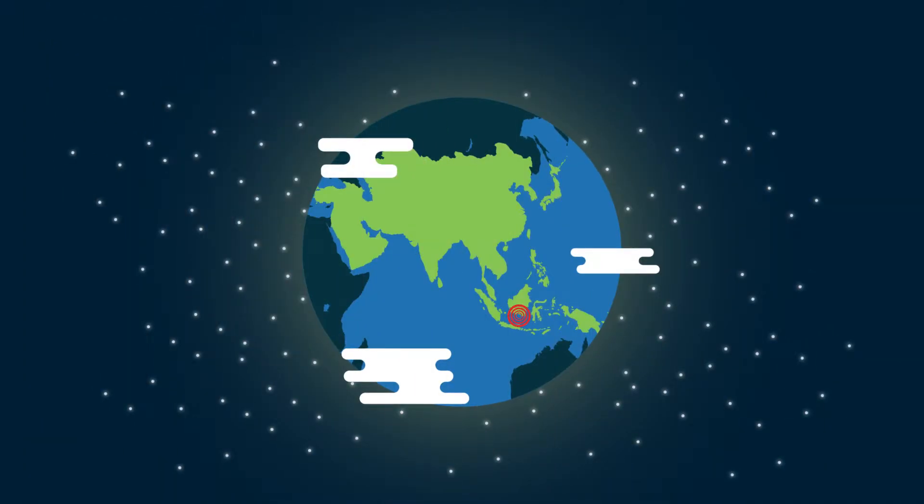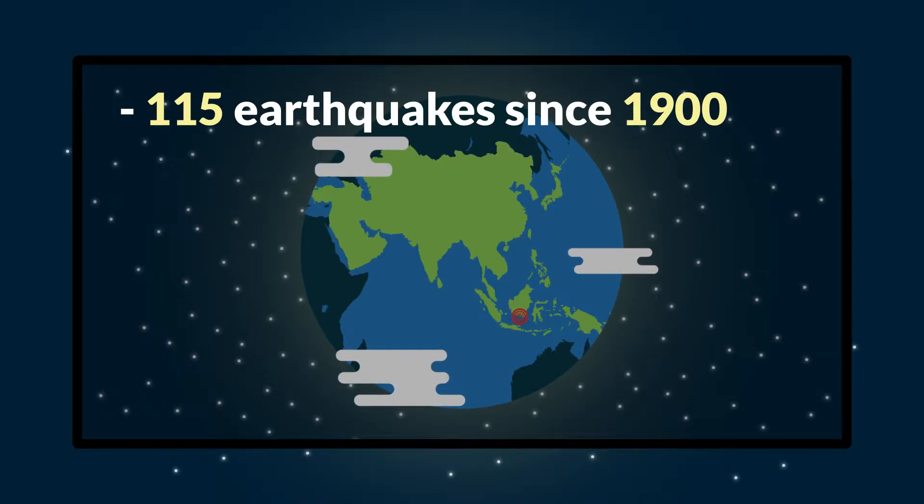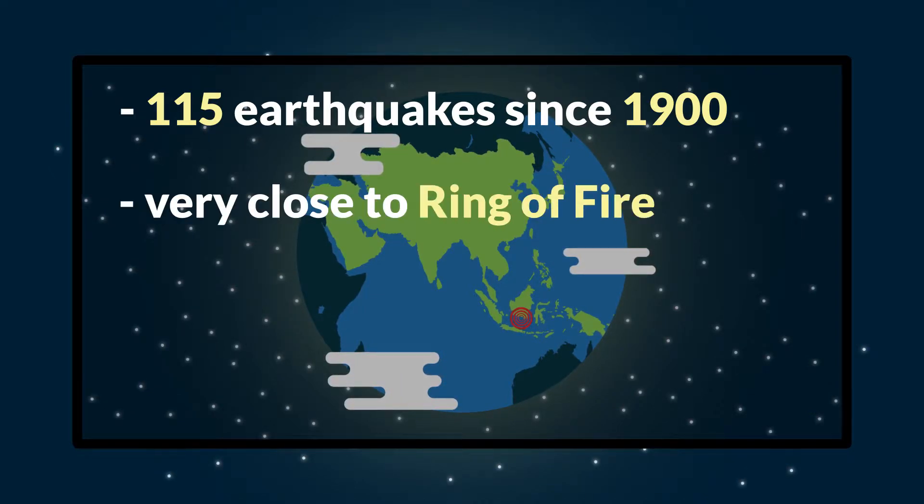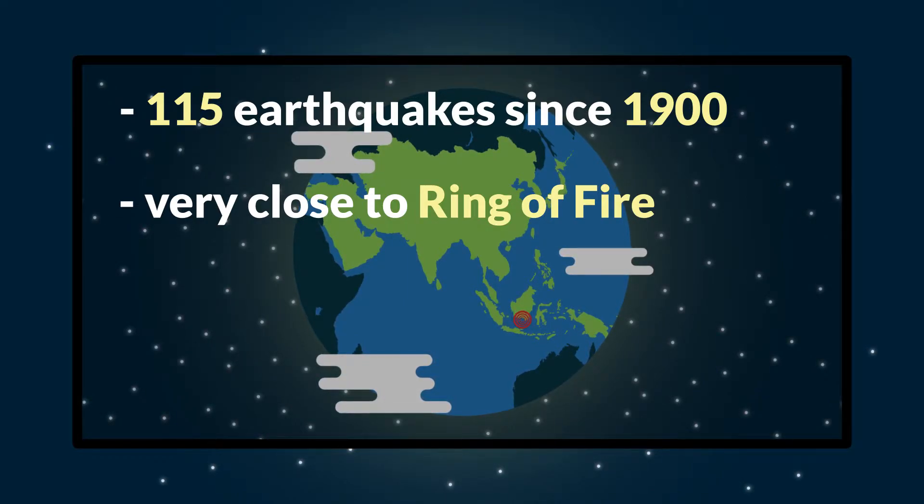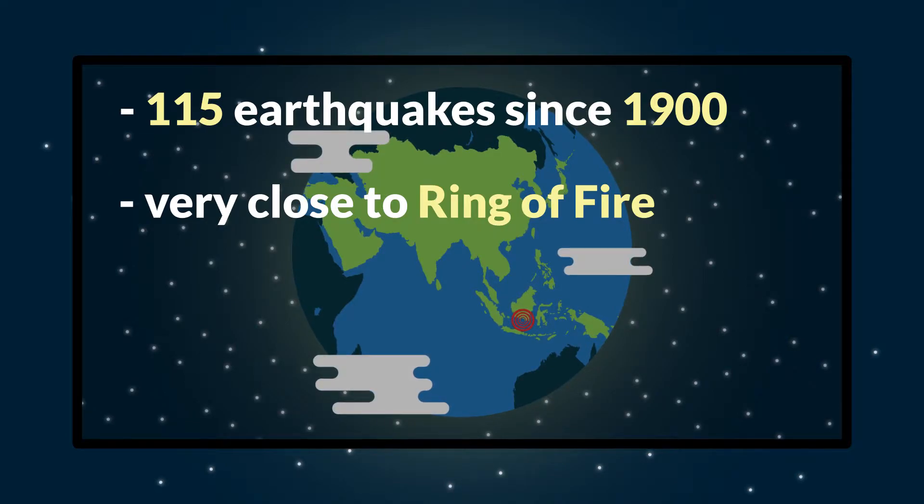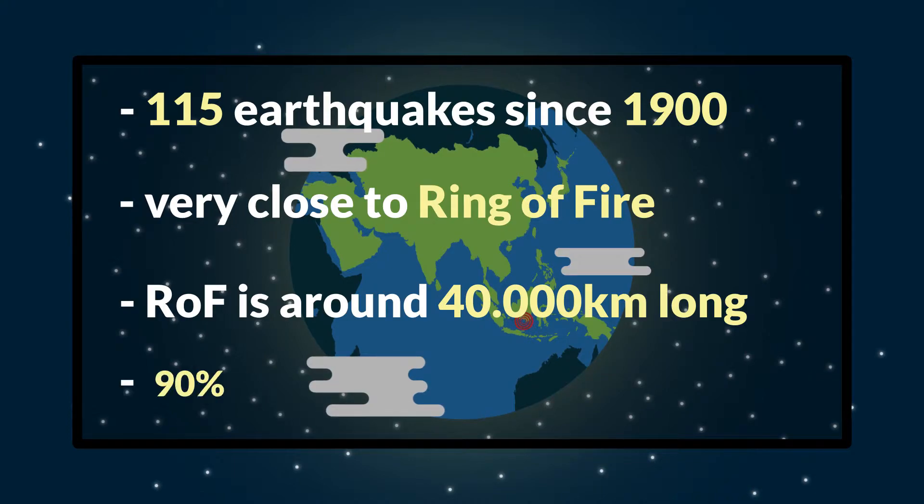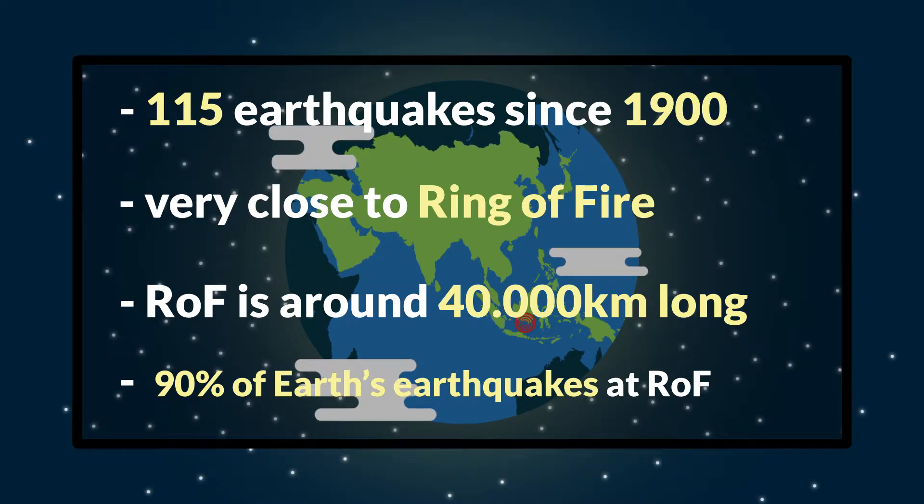Another earthquake prone country is Indonesia. Since 1900 they experienced around 115 earthquakes of significant magnitude. That is because Indonesia is very close to the so-called ring of fire. Ring of fire is a path along the pacific ocean characterized by active volcanoes and frequent earthquakes. Its length is approximately 40,000 kilometers. 90% of Earth's earthquakes occur along its path including the planet's most violent and dramatic seismic events.